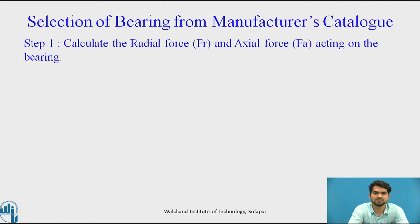In this slide we are going to see the selection of the bearing from a manufacturing catalogue. Step number 1 is to calculate the radial force and the axial force acting on the bearing. As different forces act on the shaft, we have to consider those forces acting on the bearing — that is, we have to calculate the radial force and the axial force acting on the bearing.